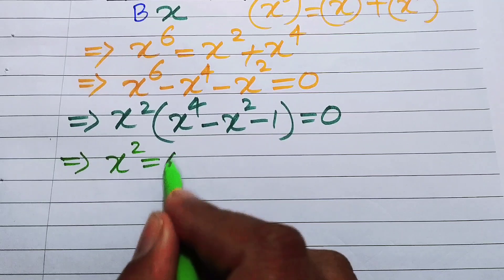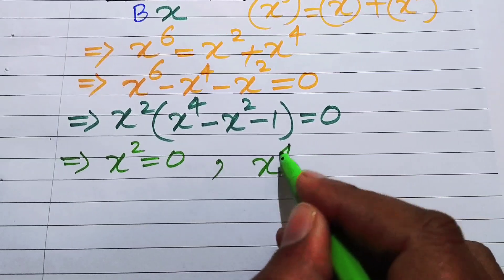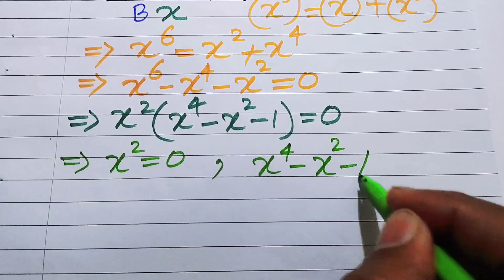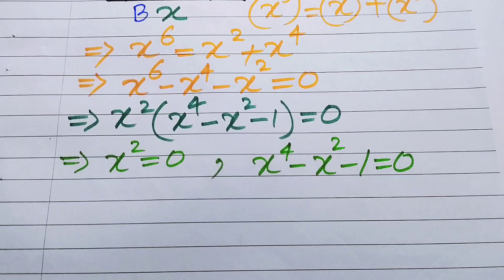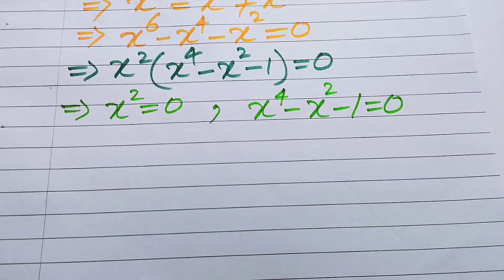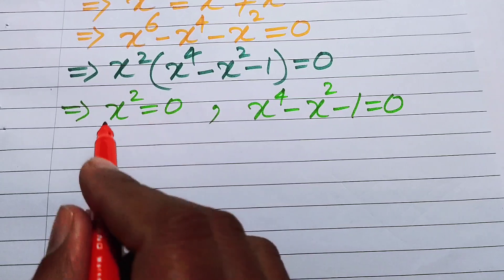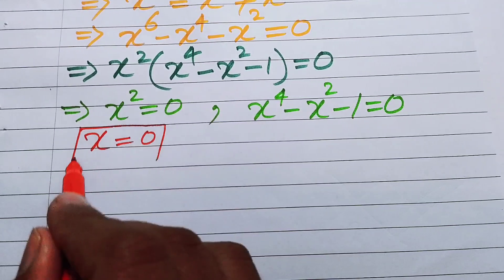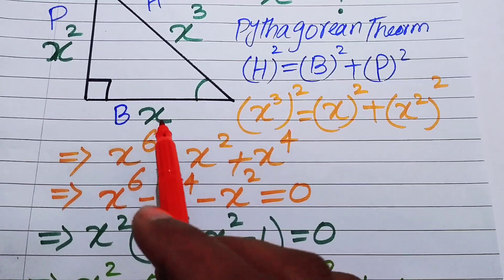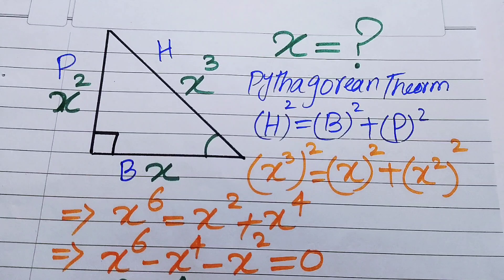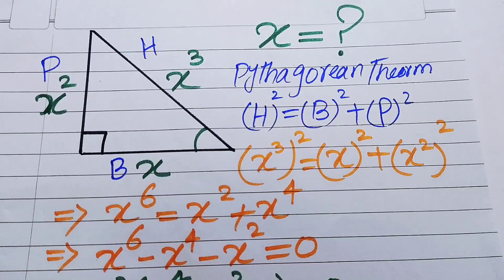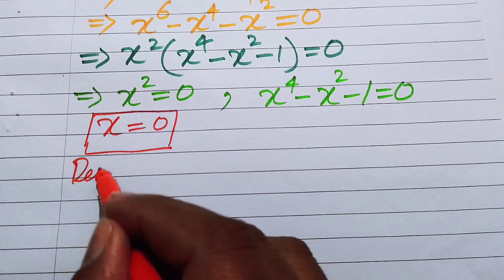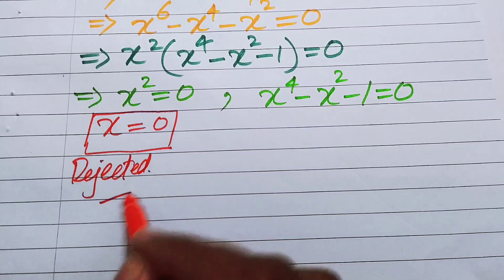We now have two cases. Case 1: x² = 0, and Case 2: x⁴ − x² − 1 = 0. In Case 1, taking the square root of both sides gives x = 0. But since x is the base of the right triangle, the length of any side cannot be 0, so we reject this case.